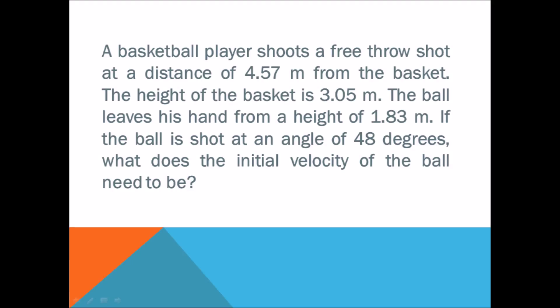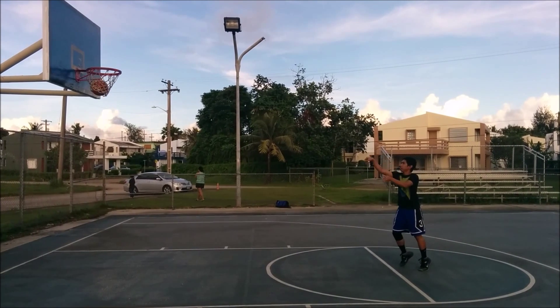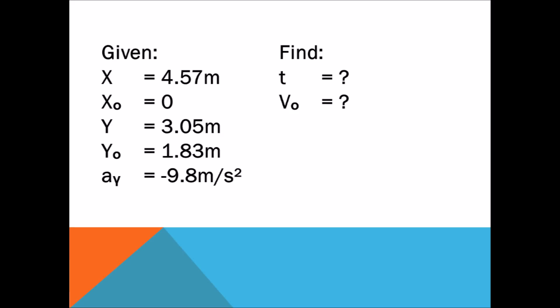A basketball player shoots a free throw shot at a distance of 4.57 meters from the basket. The height of the basket is 3.05 meters. The ball leaves his hand from a height of 1.83 meters. If the ball is shot at an angle of 48 degrees, what does the initial velocity of the ball need to be? The given values are: x equals 4.57 meters, initial x position is zero, y equals 3.05 meters, initial y position is 1.83 meters, and acceleration in the y direction is negative 9.8 meters per second squared. We are trying to find the time and the initial velocity.